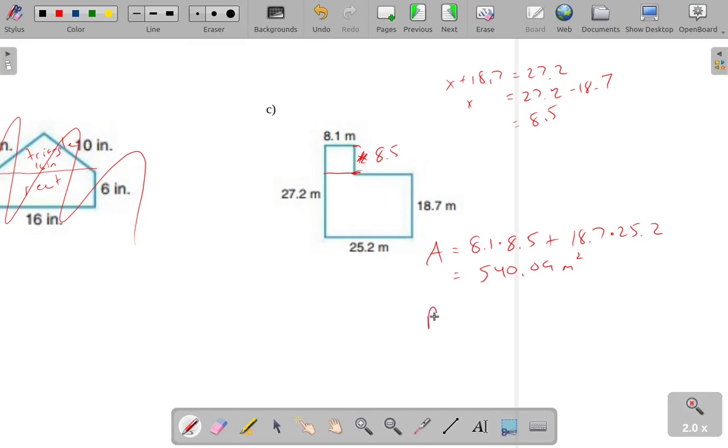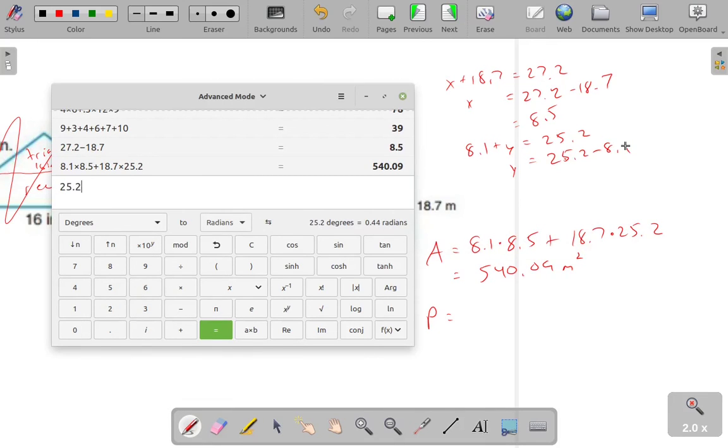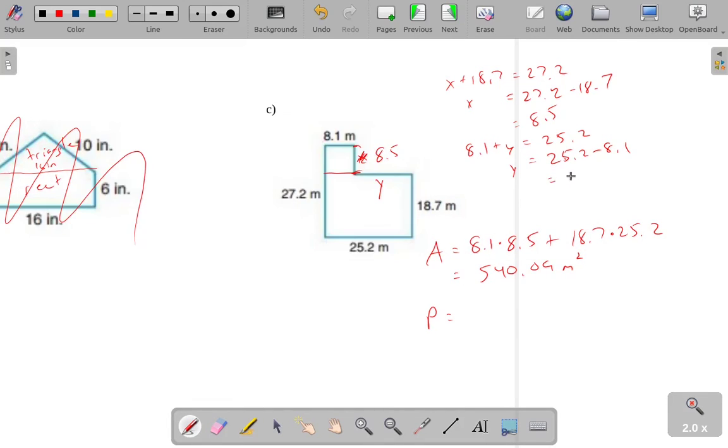For the perimeter, well, I need to know all the side lengths, and it looks like I don't know this side length yet, this one right here. So, I can do a similar sort of thing to find that side length. I know that this distance plus this distance, if I was to move that up, it looks like this. The sum of those must be this 25.2. So, I get 8.1 plus y equals 25.2, thus y must be 25.2 minus 8.1, which is 17.1.